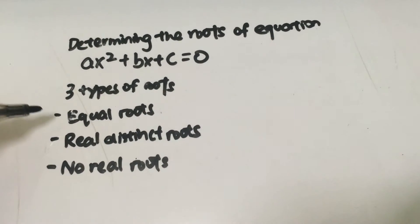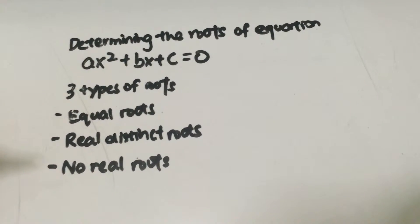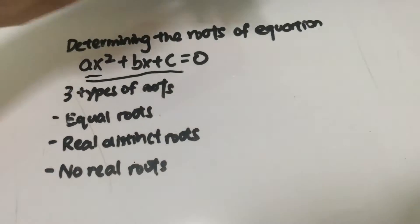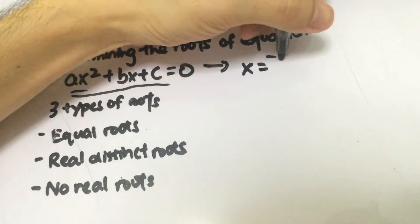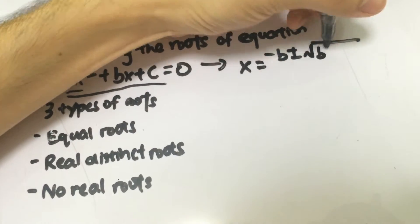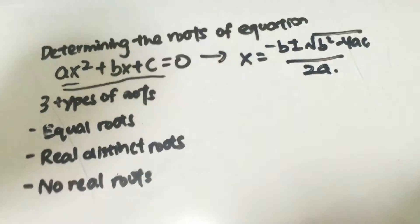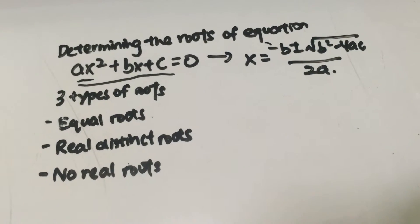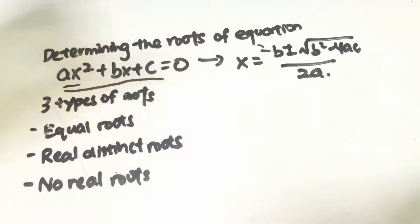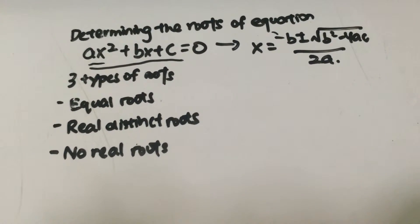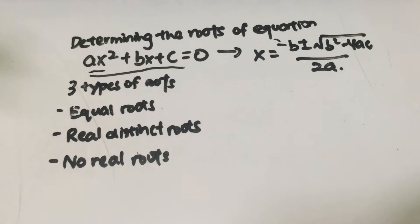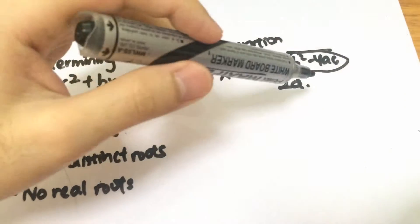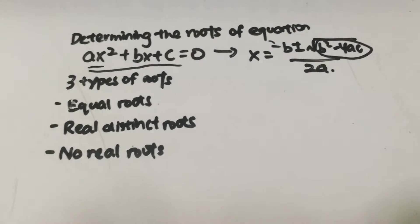So basically, how do we determine whether there are equal roots, real distinct roots, or no real roots? When you make x the subject of a quadratic equation, you get x equals to minus b plus or minus square root of b squared minus 4ac over 2a. If you just want to determine the type of roots, you can look at just this portion — b squared minus 4ac — because this portion alone will determine the type of roots.